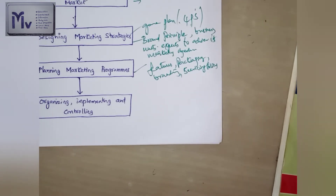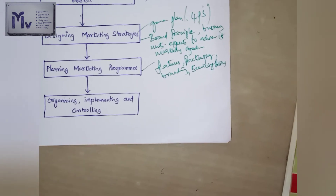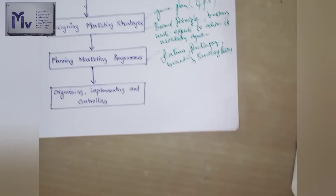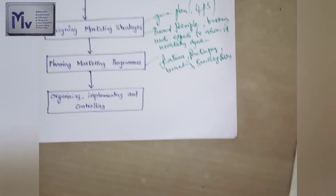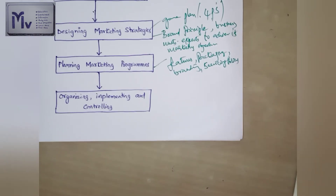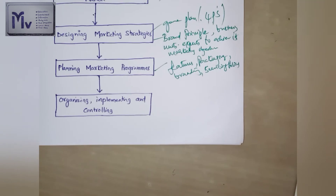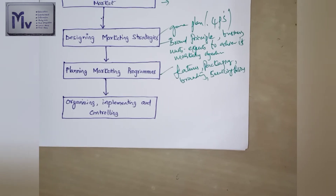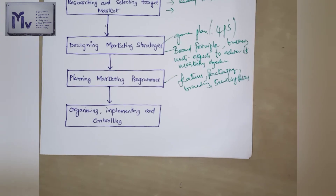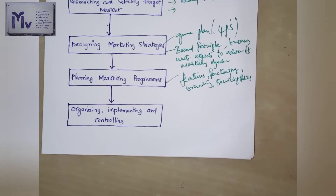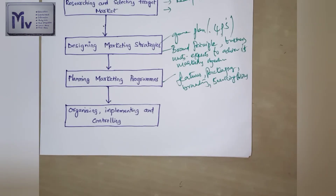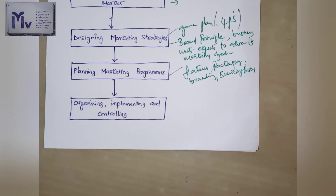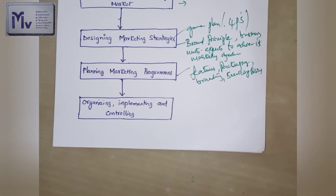Planning also covers wholesale and retail prices, discounts, allowances, and credit terms. It involves the identification and recruitment of people and linking various marketing facilitators so that products and services are efficiently supplied to the target market. This step also includes advertising, sales promotion, and publicity.